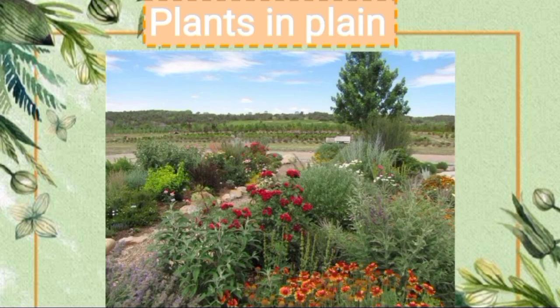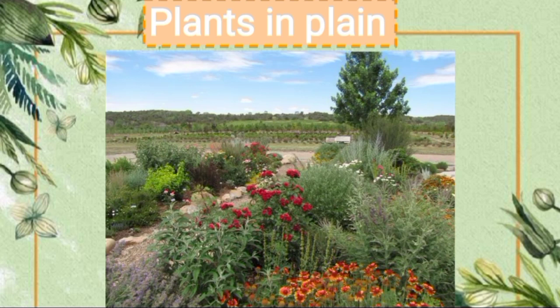Let's understand plants growing in plains. Plains are flat and large areas of land. Generally, plains are neither very cold nor very hot. They support the growth of a variety of trees, herbs, shrubs, and other plants. Some examples of trees growing in plains are peepal, mango, banyan, gulmohar, and cotton.